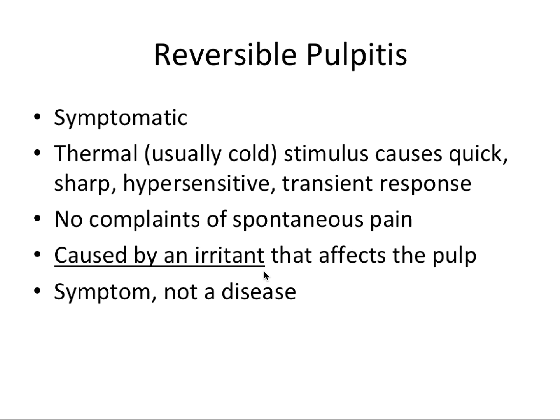The second pulpal diagnosis is reversible pulpitis. In contrast to a normal pulp, this one is symptomatic. The thermal — usually cold — stimulus causes a quick, sharp, hypersensitive transient response. The thermal response is heightened as opposed to normal pulp, which is just mild to moderate. This is an example of hyperalgesia, where a normal situation hurts a little bit and the inflamed situation hurts a lot more. This is why you always test several teeth — adjacent, opposing, and contralateral — so you have a baseline response to compare it to.